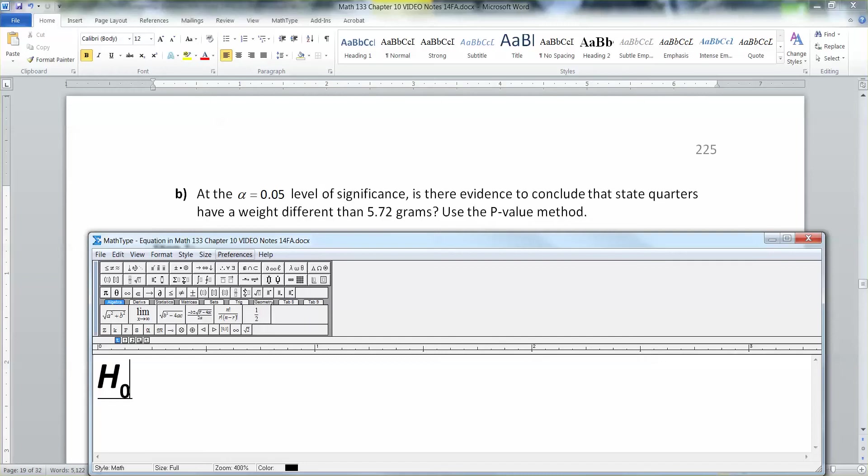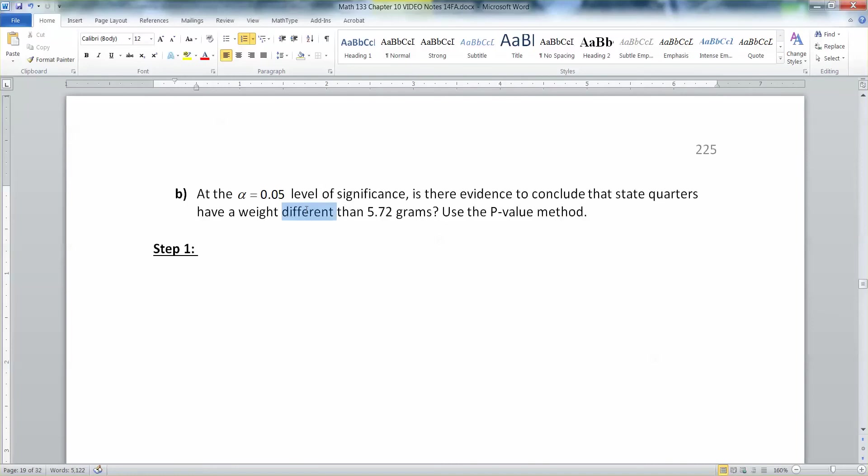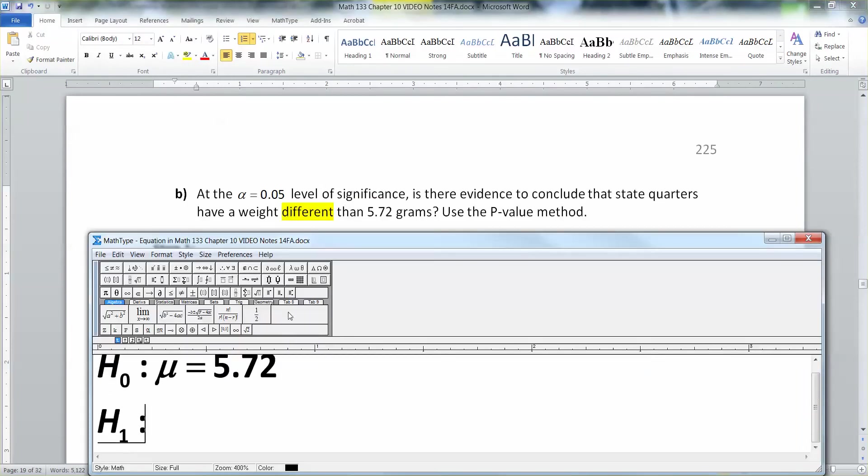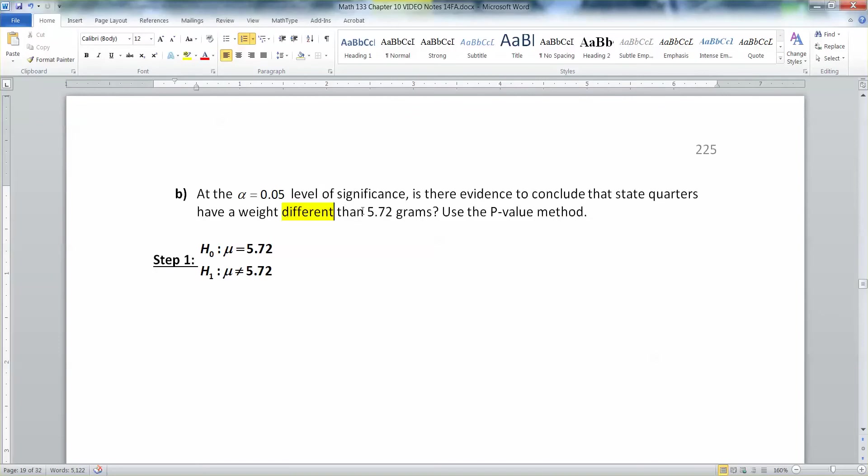H0, which is our null hypothesis, is mu equal to, now we assume that it's 5.72 unless we can prove it otherwise. The alternative to that is based off of this word right here, different. Now because it says different, that implies not equal to, because we're not making a decision about whether we think it's more or less, we just think it's different than 5.72. So there's your null and alternative hypotheses. In case you missed it, you're doing a two-tailed test.